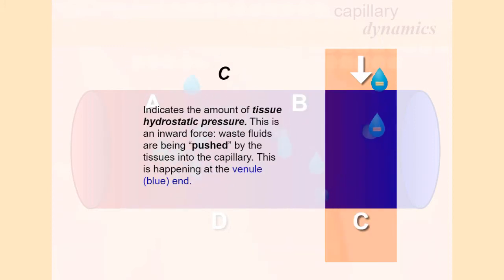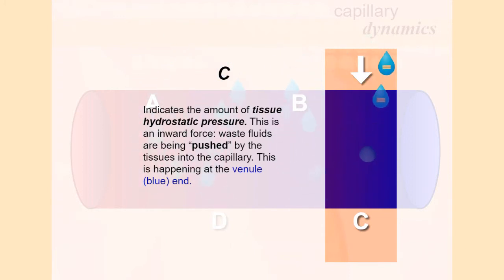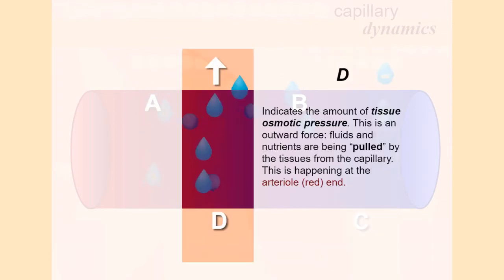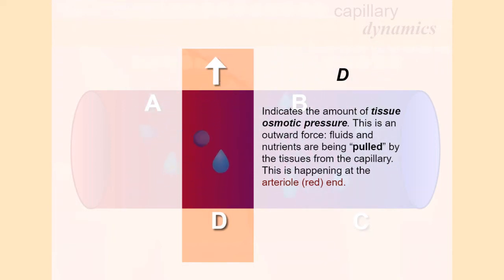C indicates the amount of tissue hydrostatic pressure. This is an inward force — waste fluids are being pushed by the tissues into the capillary. This is happening at the venule end. D indicates the amount of tissue osmotic pressure. This is an outward force — fluids and nutrients are being pulled by the tissues from the capillary. This is happening at the arterial end.